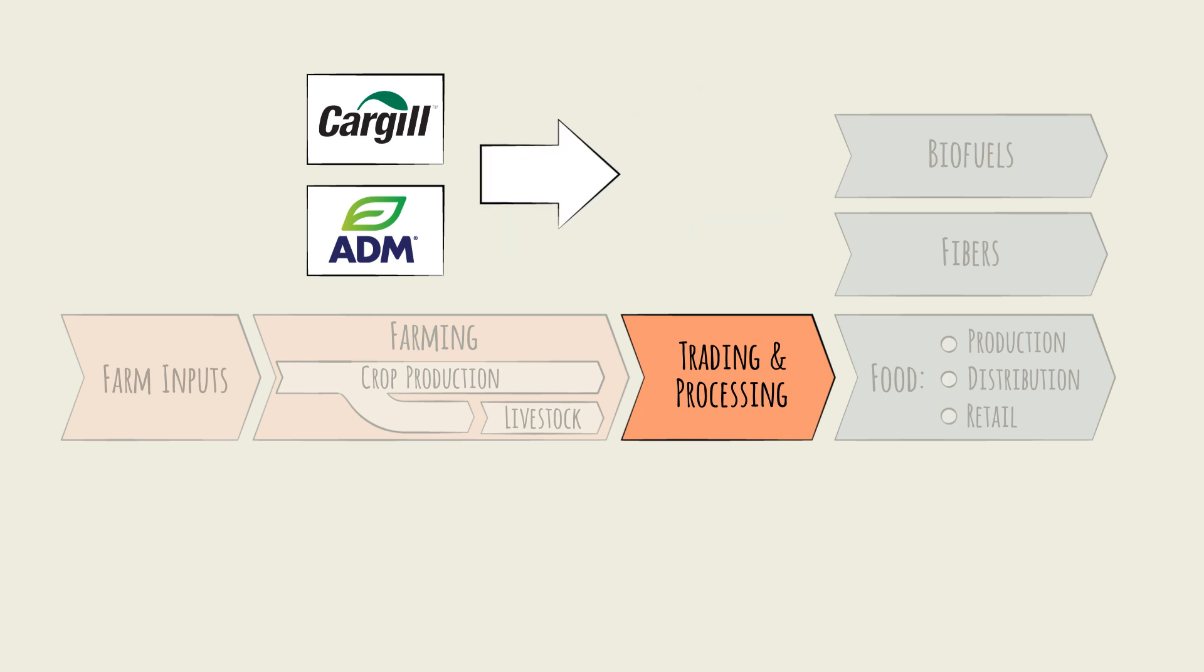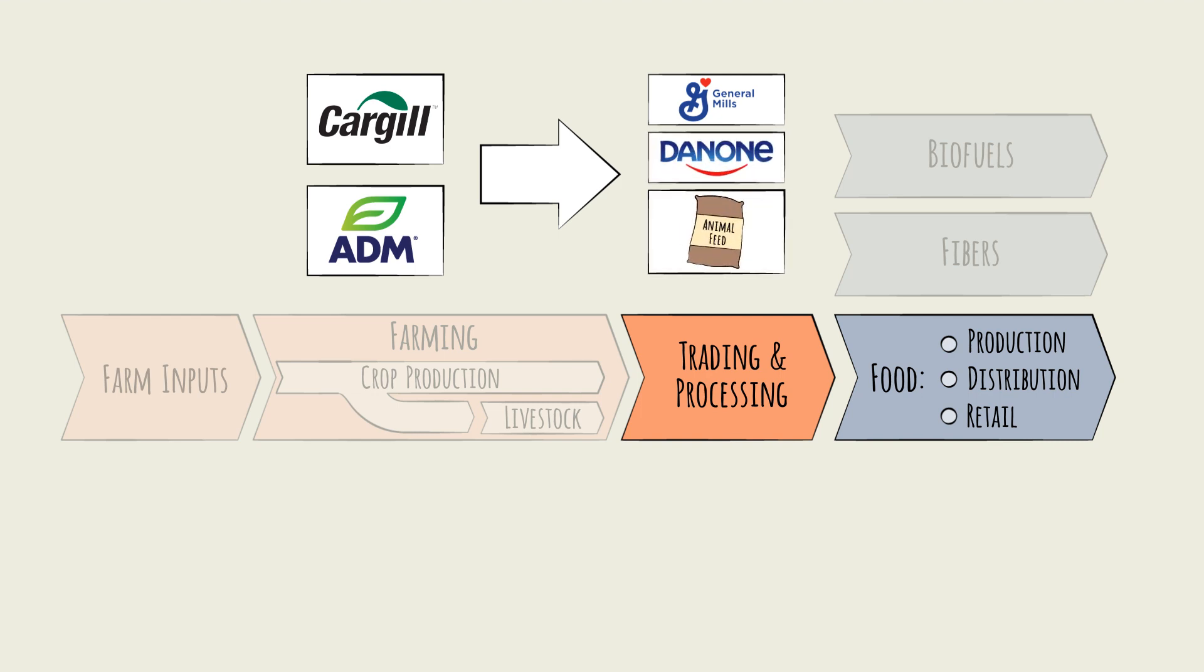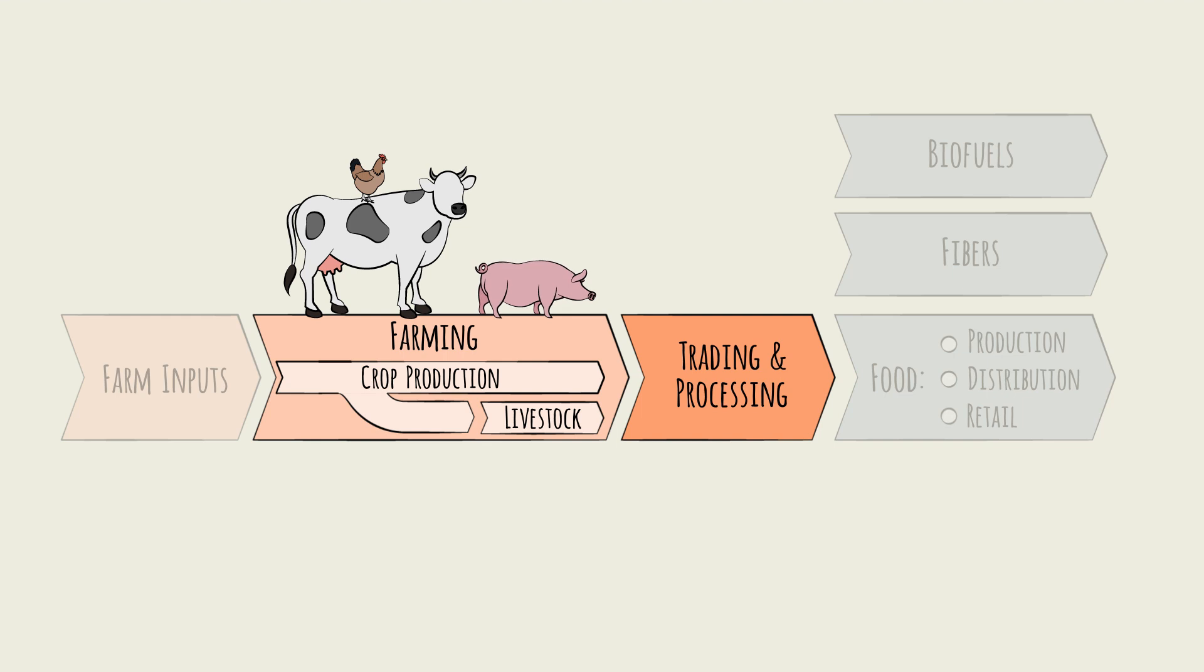Traders sell much of these processed outputs to food production companies, like the CPG giants General Mills and Dannon, as well as the producers of animal feed. Livestock can be traded and processed in a similar way, but typically by different players altogether.